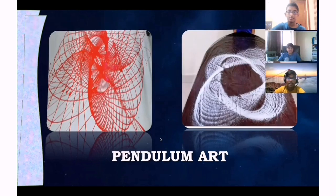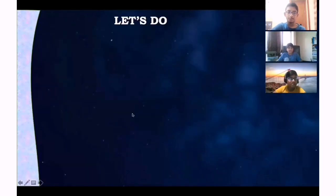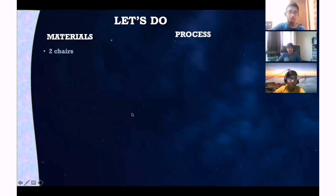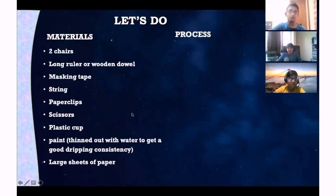The materials required for making the pendulum are: two chairs, a long ruler or wooden dowel, masking tape, string, a paper clip, scissors, a plastic cup, paint thinned out with water to get a good dripping consistency, and large sheets of paper.